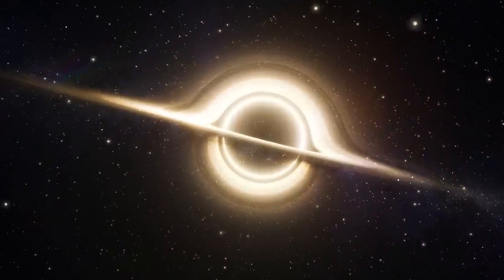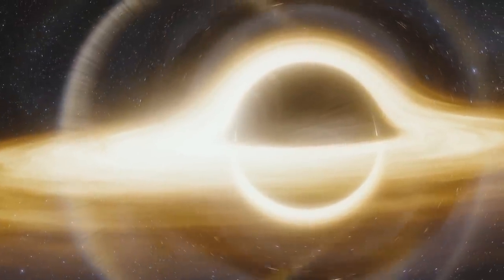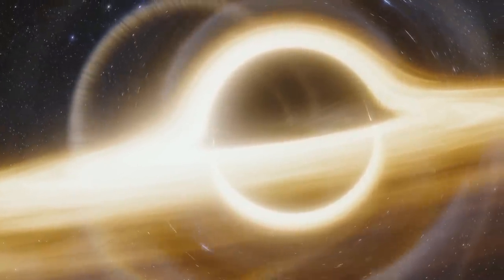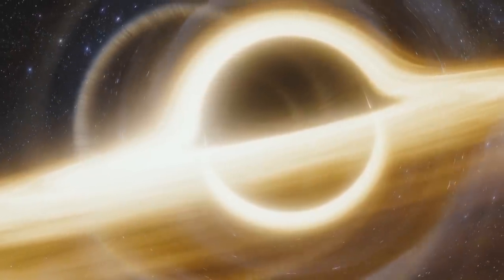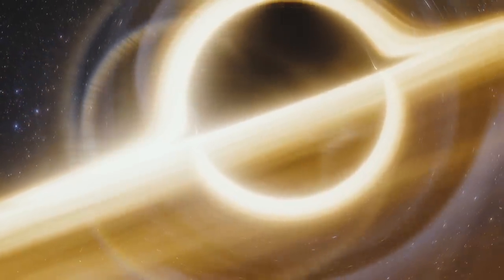Under these conditions, the object continues to collapse under its own weight, crushing itself down to zero size. However, according to Einstein's theory, the object's mass and gravity remain behind in the form of an extreme distortion of the space and time around it. This distortion of space and time is the black hole.